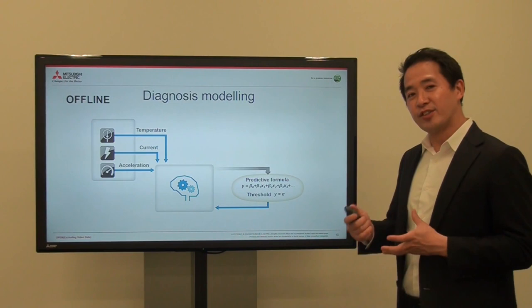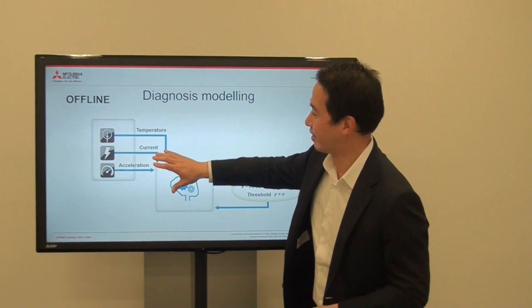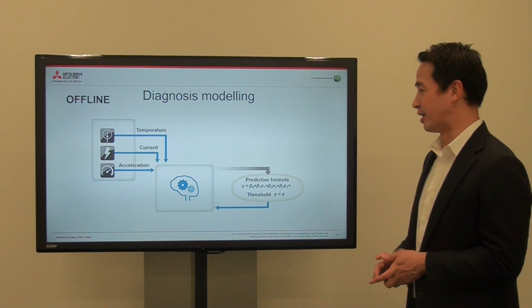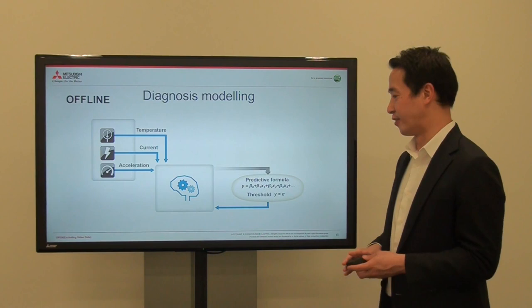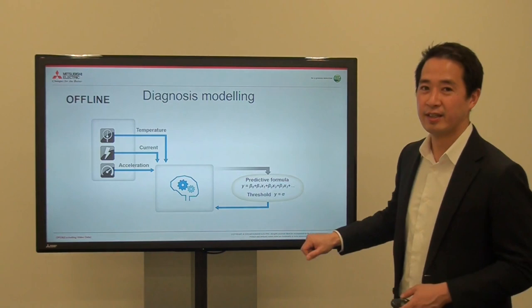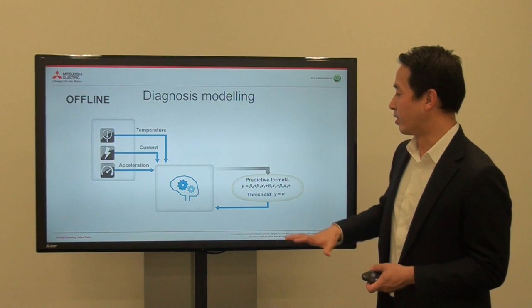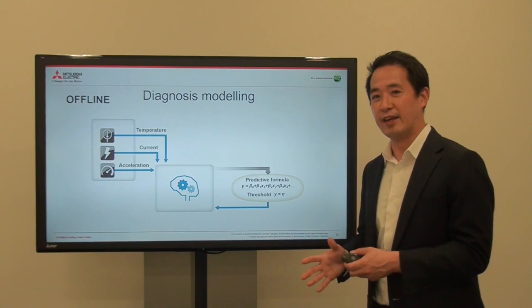After doing the data diagnostics, we found out that the temperature, current, and acceleration patterns of the motor were most relevant to the gear wear. So we took these three data points and made a predictive formula: temperature is A, current is B, acceleration is C — with some multipliers — and we will be able to determine the gear wear. We also create a threshold.